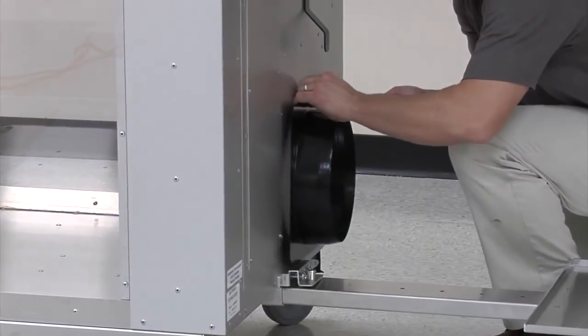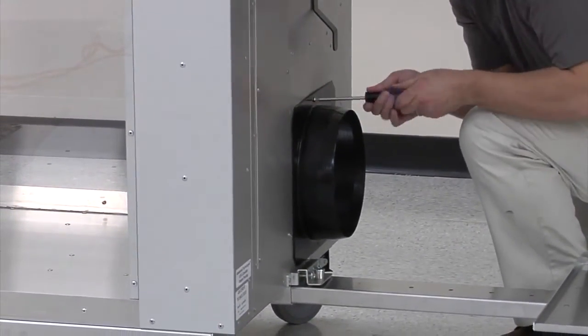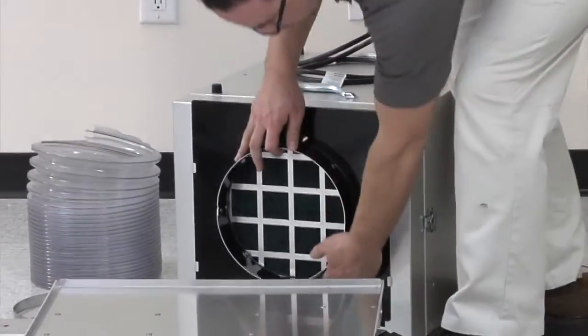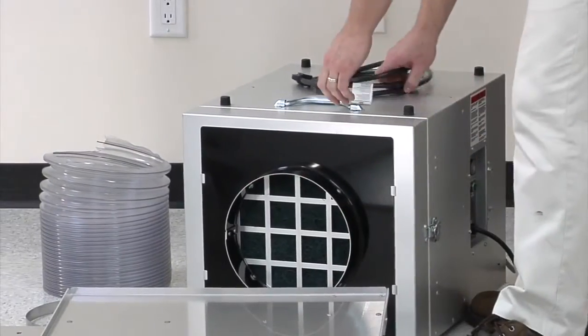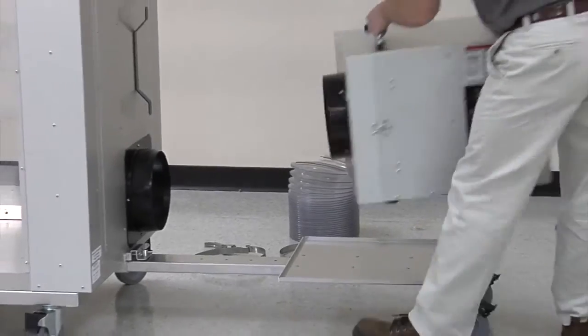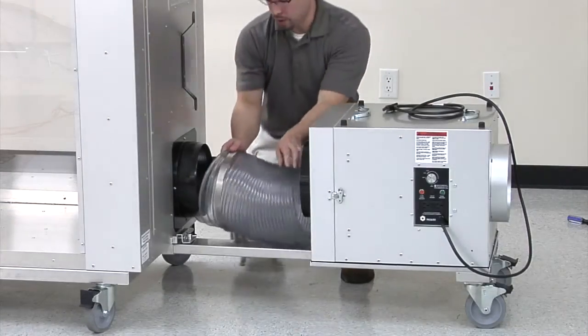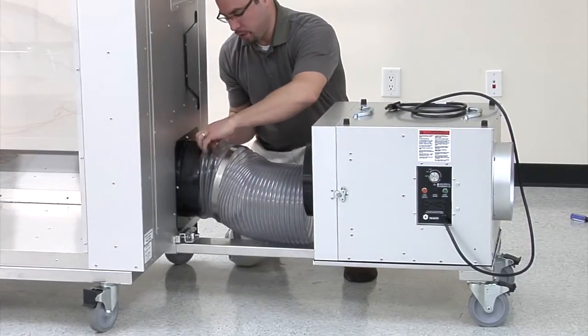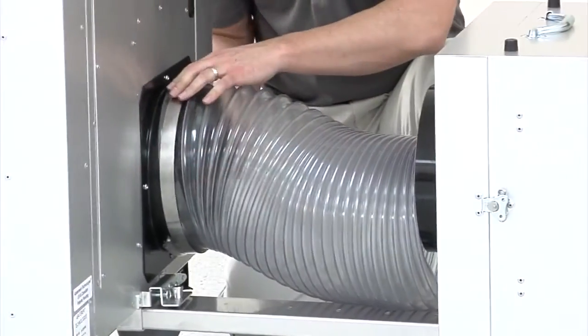Fasten the duct adapter to the AG8000. Slide the duct adapter into the tabs on the PAS600 intake door. Place the scrubber on the caddy. Attach the flex duct to the AG8000 and PAS600 and secure each with the duct clamps.